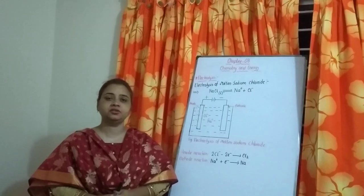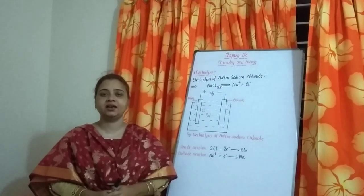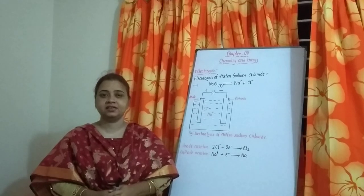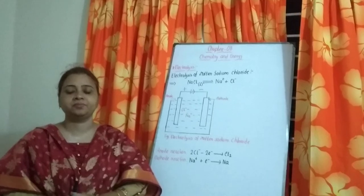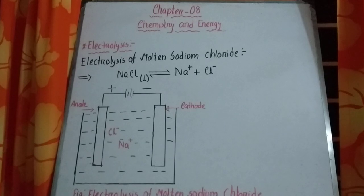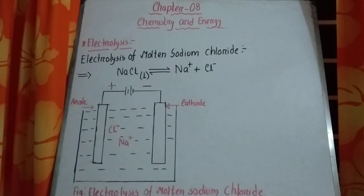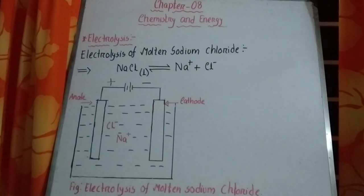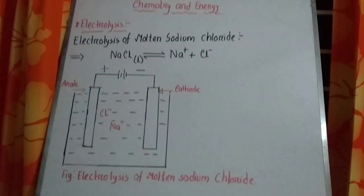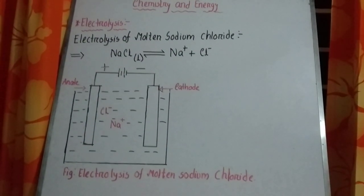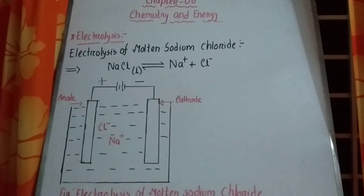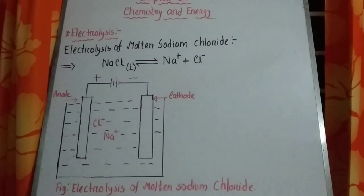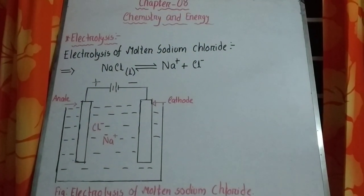Today we are going to explain about electrolytic cell and electrolysis. Electrolytic cell is such a type of cell where a chemical reaction can take place by the influence of electricity. It is known as electrolytic cell.